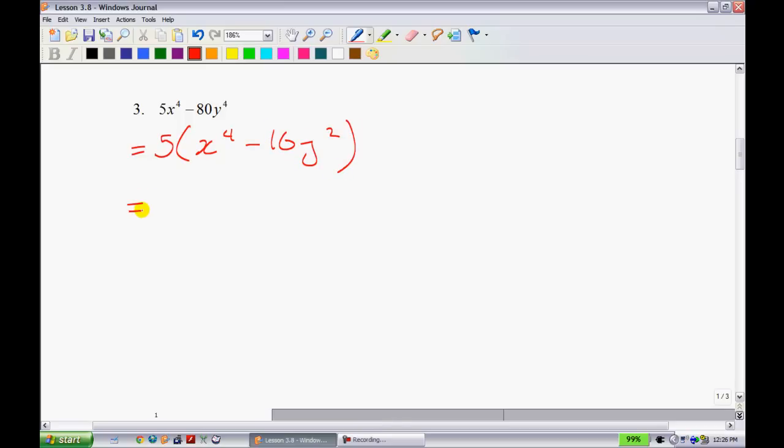Notice how I can take the square root of x⁴, and I can take the square root of, this should be a 4 over here, of -16y⁴. Since I can do that, I can use the difference of squares. So I start with my two brackets again. The square root of x⁴ is just x². So I'm going to write x² in here and here. Make one of the signs positive, make one of them negative.